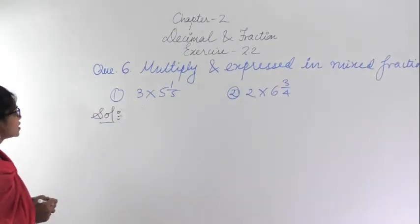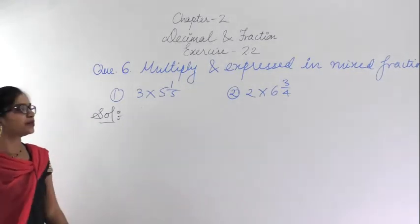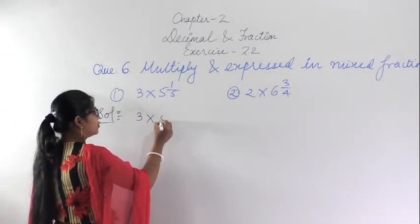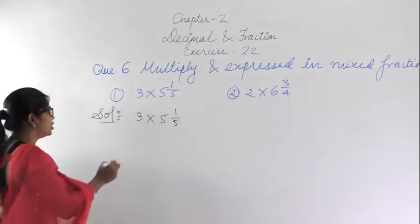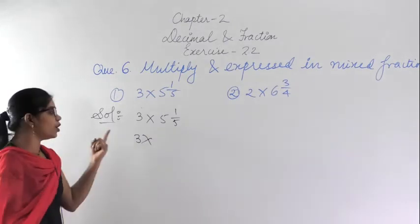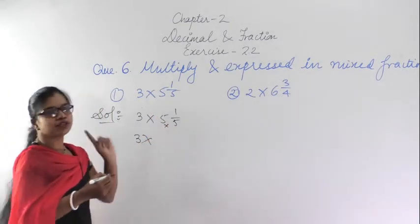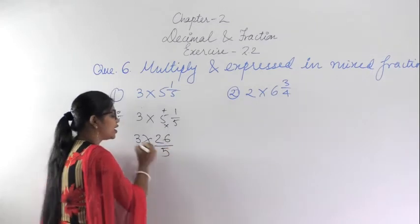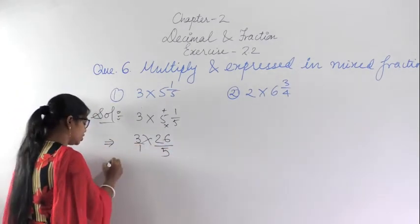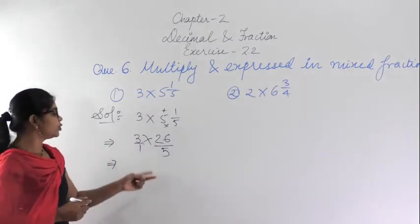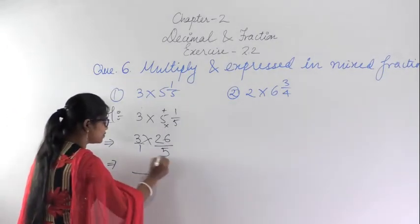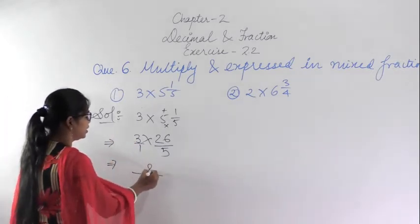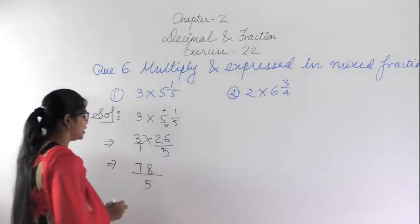This is question number 6: multiply and express in the form of a mixed fraction. You are given 3 multiplied by 5 and 1/5. First convert the mixed fraction to a proper fraction: 5 into 5 is 25, plus 1 is 26, so it becomes 26/5. Now multiply 3 by 26/5. If nothing cancels, multiply directly: 26 into 3 — 6 threes are 18, carry 1, 3 twos are 6 plus 1 is 7 — giving 78/5.